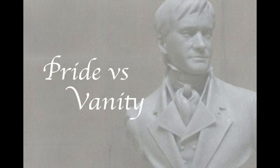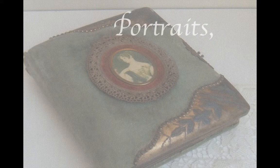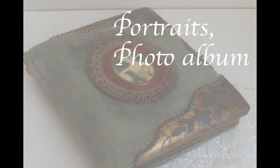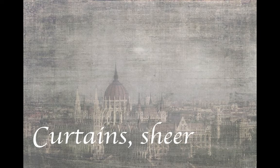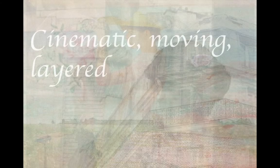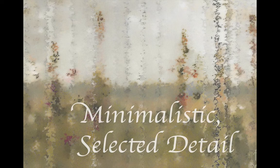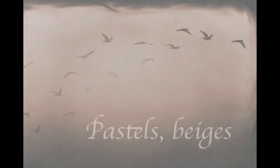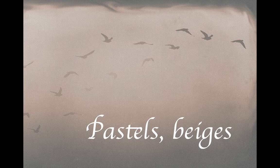I started using the director's terminology throughout the sections as we talked through pride versus vanity, finding images that represented the period fairly well. The visual categories included: portraits and photo albums, curtains and sheers, cinematic and layered movement, minimalistic selected detail, and pastels and beiges. Notably, I picked only one of the three colors — planning to leave blues and greens for the costumes to use — feeling it was more important that the set be a more neutral beige color.